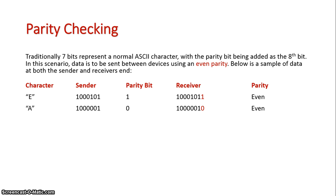The next character is A: 1, 0, 0, 0, 0, 1, with a parity bit of 0. That keeps it at two 1s, which keeps it even.